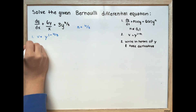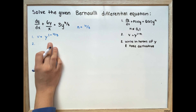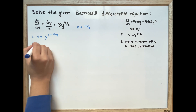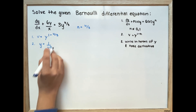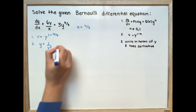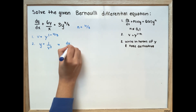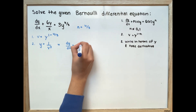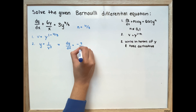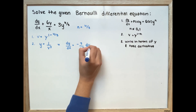Next, we rewrite in terms of y. So y is equal to 1 over v cubed. Now we take the derivative: dy/dx is equal to negative 3v to the power of negative 4, times dv/dx.